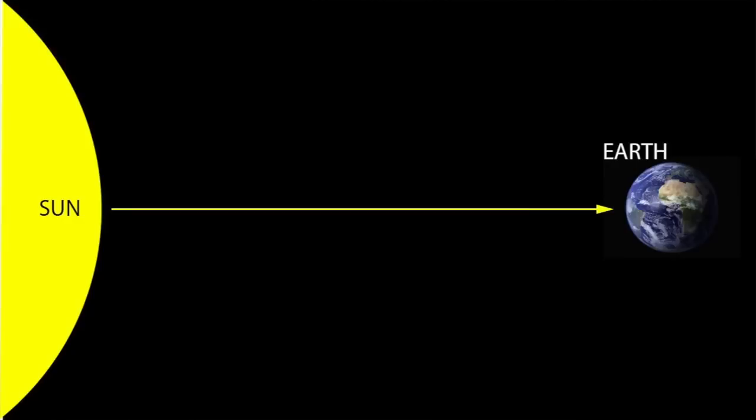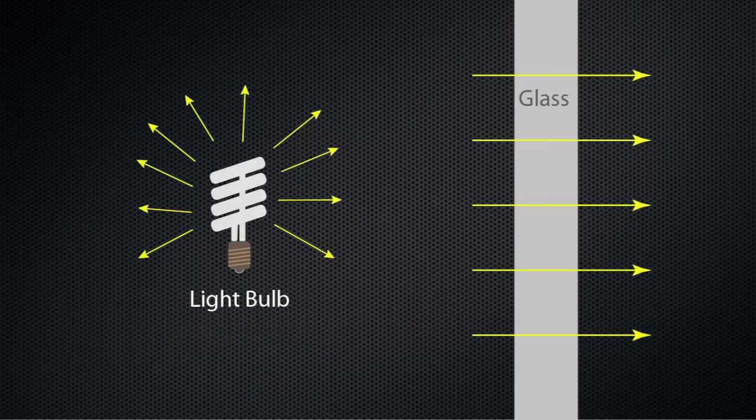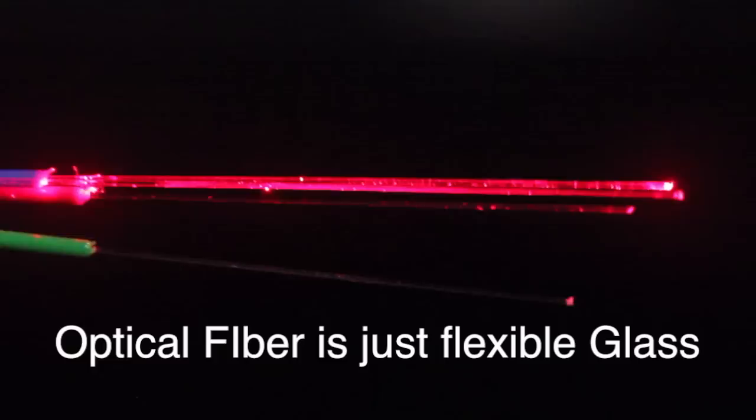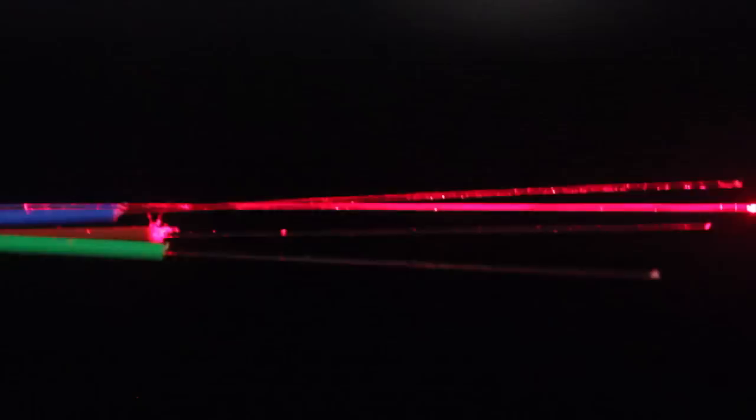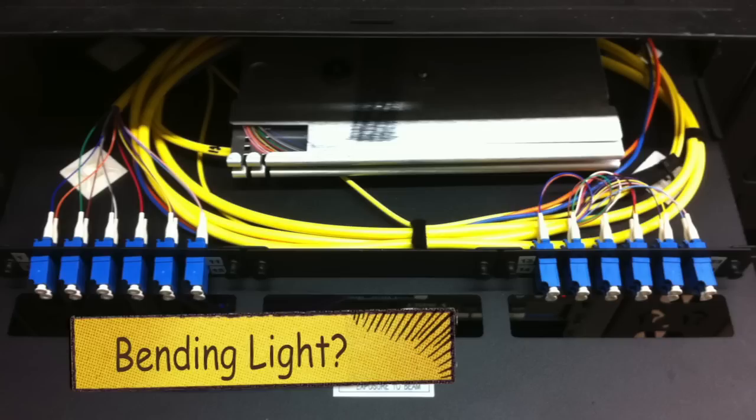Light rays always travel in a straight line, even when they pass through transparent glass, such as a window. So if a fiber optic cable were held in a straight line, light rays would pass through from one end to the other, just like a really, really thick piece of glass. But what happens when you bend the fiber optic cable? How does it make the light bend with it?